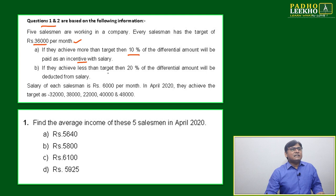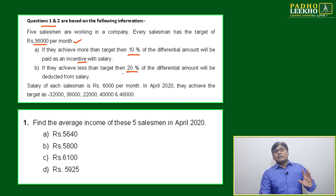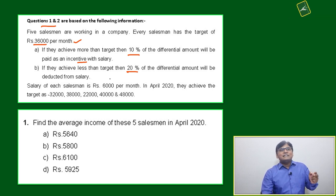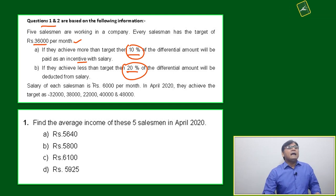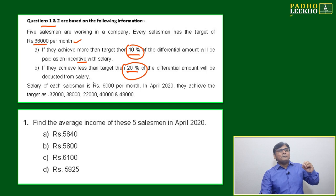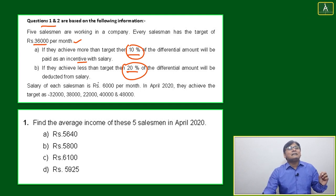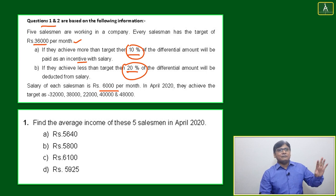Second condition: if they achieve less than the target, then 20% of the differential amount will be deducted from salary. If you are performing less, the deduction is more — 20% deduction versus only 10% incentive for overachievement. For example, if you achieved only 34,000 instead of 36,000, that is 2,000 less, so 20% of 2,000 means 400 rupees will be deducted. The base salary of each salesman is 6,000 per month.